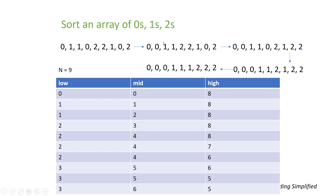Low now points to the next position after the last placed 0. Mid encounters a 2, so we swap it with high. Since high is also 2, we don't swap — we just decrease high from 8 to 7. Now mid sees a 0 again, so we swap with the low value: 2 comes to mid's old position and 0 goes to low's position. We keep processing — again a 0 is found and swapped with low, placing 0 correctly and moving 1 to mid's position.